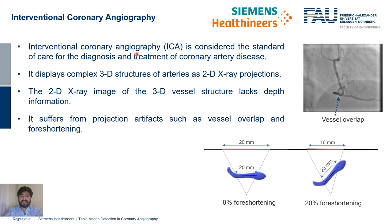ICA, which is considered the gold standard for diagnosis of coronary artery disease, lacks depth information. That's why it suffers from projection artifacts such as vessel overlap and foreshortening. Vessel overlap can happen due to vessel crossing in angiograms, whereas vessel foreshortening can happen whenever the vessel of interest is not parallel to the detector.